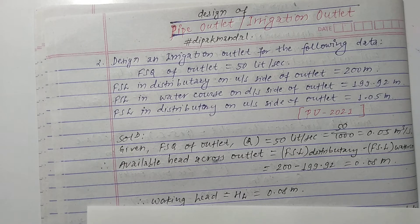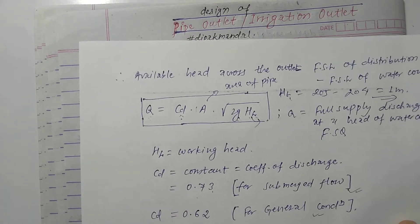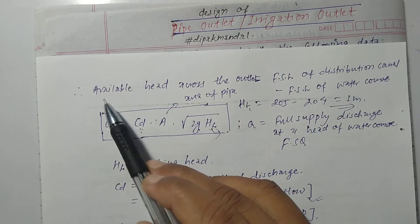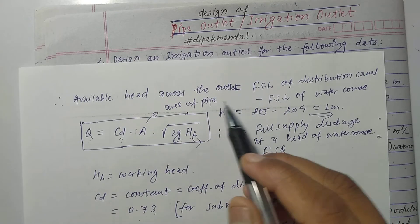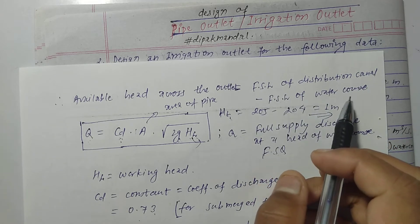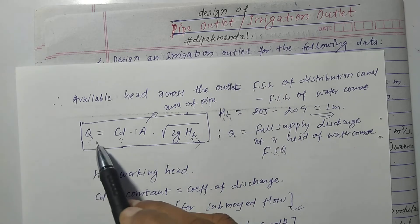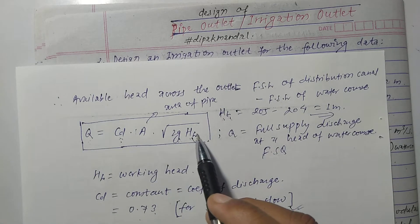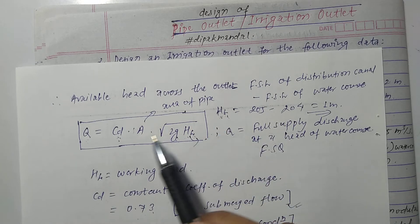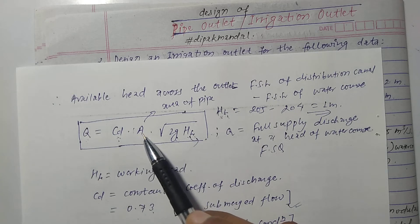Let's summarize some concepts before solving this numerical. First, we need to determine the available head. Available head can be calculated by: full supply level of distribution channel minus full supply level of water course — that gives us HL, the available head. The value of Q is already given. For CD and A: CD is the coefficient of discharge.